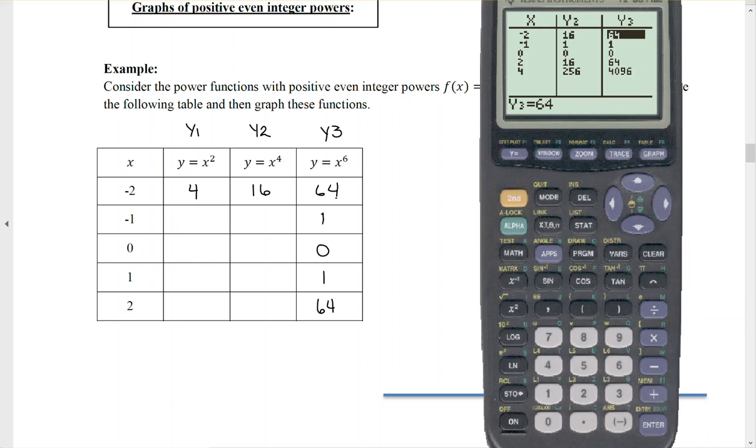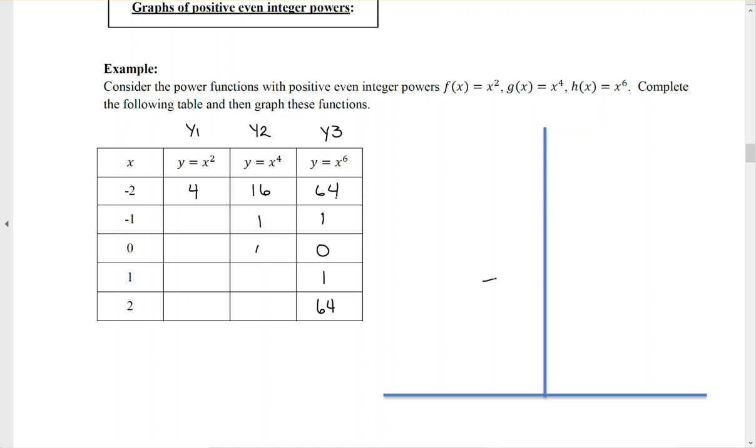You can go ahead and finish filling in those values there. So we've got 16, 1, 0, 1, 16. And this was going to be 4, 1, 0, 1, 4.